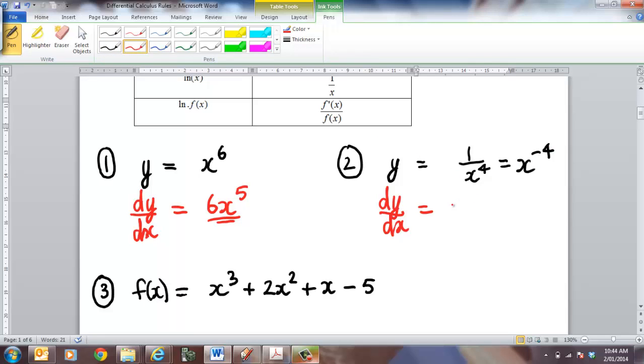When you change from the top to the bottom and bottom to the top you have to change the sign. So now I can bring the power down it becomes negative 4 and then when I decrease that by 1 it's going to become x to the negative 5 because that will be negative 4 minus 1. You may write it back in the same form which is going to be negative 4 all over x to the 5 but it'd be okay to keep it like that.